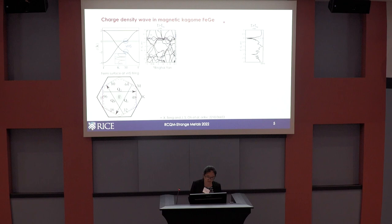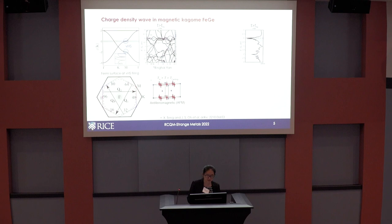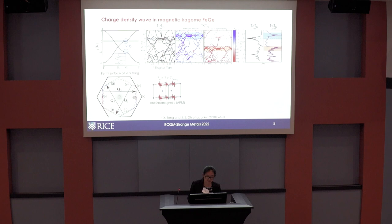I'll present our understanding of iron germanium from photoemission and DFT perspectives. In the real DFT calculation it's more complicated, but the gray-boxed area corresponds to flat bands giving high density of states at the Fermi level in the paramagnetic state. Considering the magnetic order — which is A-type AFM, meaning each Kagome layer is ferromagnetic — we carry out spin-projected calculations. The single peak in density of states splits into two: flat dispersions shifted up for spin minority bands and shifted down for spin majority bands.